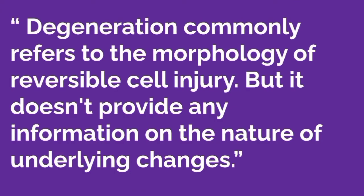So what is the definition of degeneration? Degeneration is because of some abnormal deposition — it may be of fat, water, or protein. It commonly refers to the morphology of reversible cell injury. It is reversible because if we can eliminate the accumulated substance, the changes reverse. However, it doesn't provide any information on the nature of the underlying changes inside the cell.